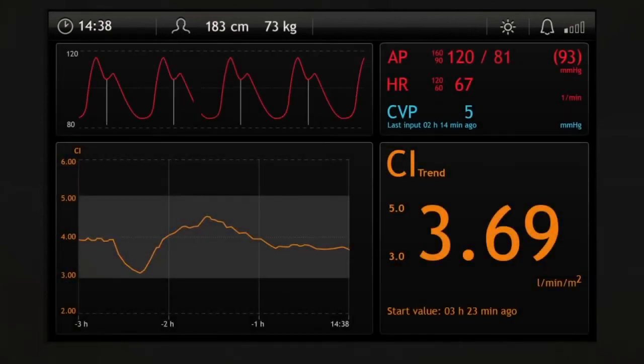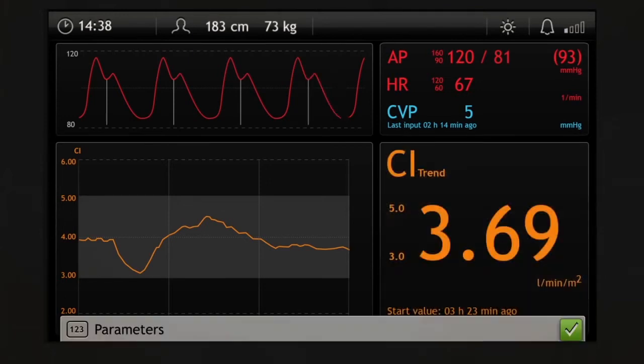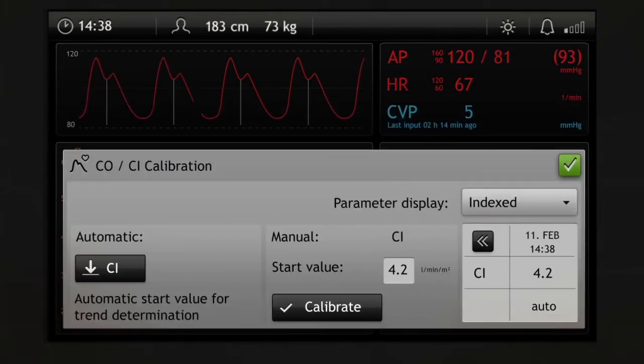To calibrate Proact, press on the CI field and tap the Proact button. Tap the CO CI button for an automatic start value calibration, or alternatively, enter a CI from an external source, e.g., measured by echocardiography.